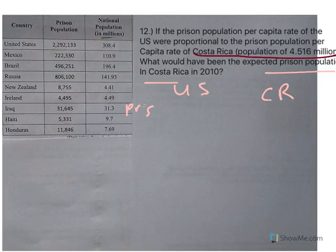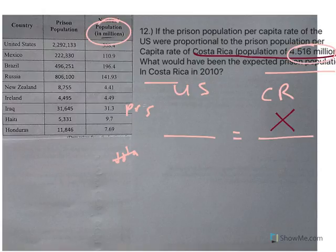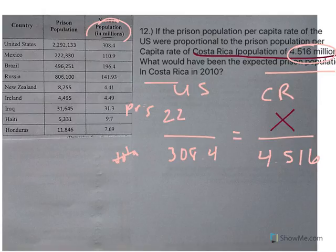So Costa Rica, U.S., we're talking about the prison over the total population. We're trying to find the Costa Rica prison population, everybody else we know. Population here is in millions, population there is in millions, so I don't need to write millions because the word would cancel out. For Costa Rica I have 4.516, and for the U.S. I have 308.4. The U.S. prison population is 2,292,133. Now I officially have my proportion set up.